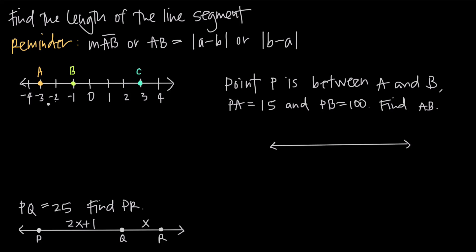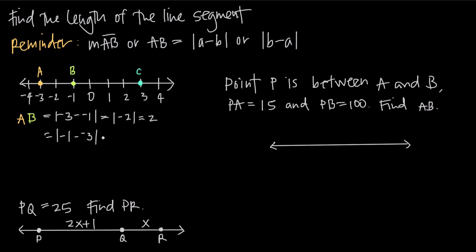If we say the length of the line segment AB, we can see that the coordinate point A is at negative 3, and that the point B is at negative 1. It's going to be equal to either the absolute value of negative 3 minus negative 1, which is the value there at B, or it's going to be equal to B, which is negative 1, minus A, which is negative 3. So it doesn't matter if we subtract B from A or A from B, we're going to get the same length either way.